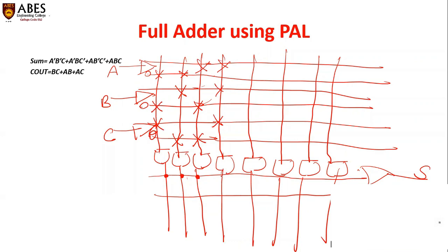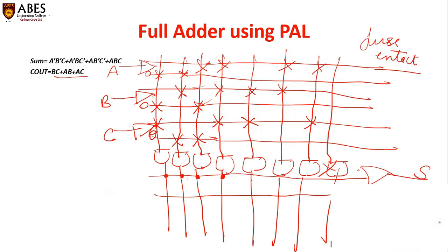By placing the circuit, the dot indicates that the OR gate is fixed. These four lines with four dots give you the expression for sum. For carry output, we take BC, AB, and AC. The fourth gate is free because there are only three min terms for carry. For a free gate, we use the fuse intact — no cross or dot is marked. This dot, this dot, and this dot give you carry out. This is the circuit implementation of full adder using PAL, and this is a very common question asked in university examinations.